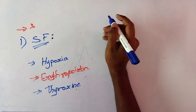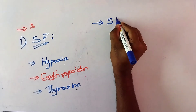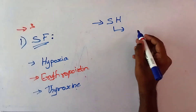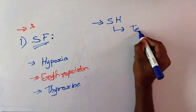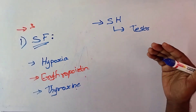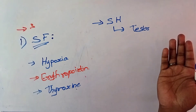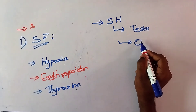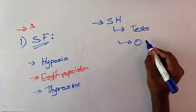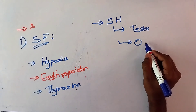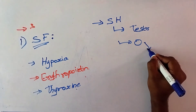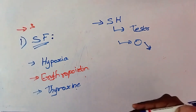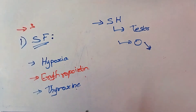The fourth stimulating factor is the role of sex hormones. Testosterone has a mild erythropoietic action — that means testosterone has some mild action as an erythropoietic factor. Estrogen also acts on the formation of erythropoiesis, but its exact role in this condition is not clearly decided.